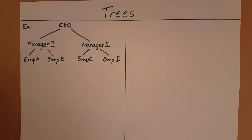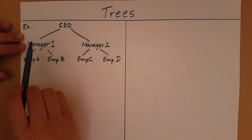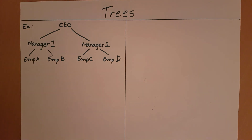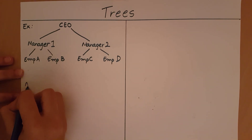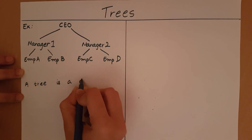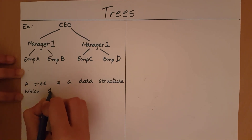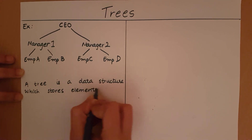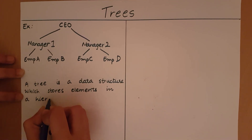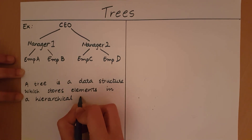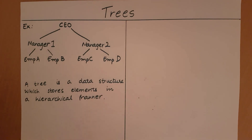This kind of hierarchical structure which we can usually see in a corporate setup can be represented using a tree. So we have a CEO, under the CEO we have managers, and under each manager we have employees. This kind of structure is called a tree. Formally, a tree is a data structure which stores elements in a hierarchical manner.